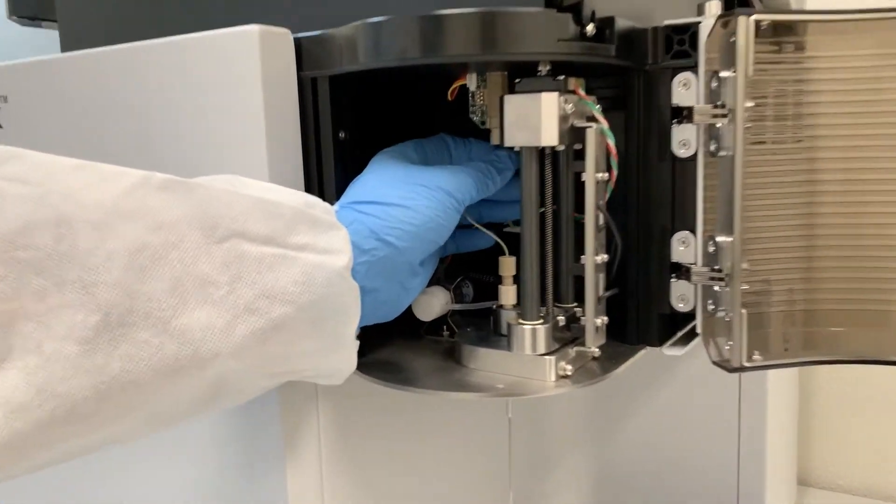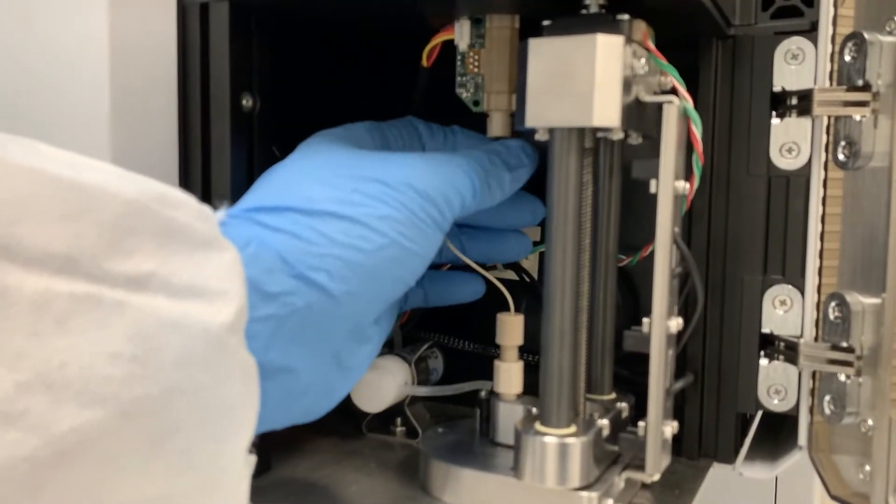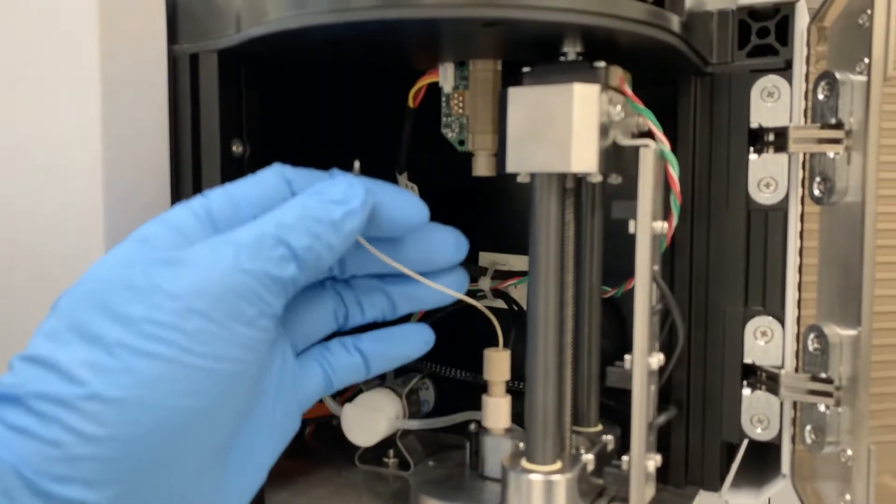Next, disconnect the black plastic nut at the top that connects the sample line into the flow cell. Lefty loosey.